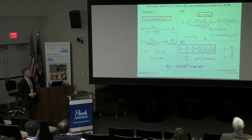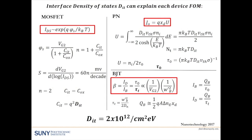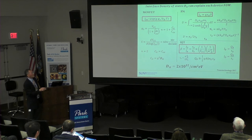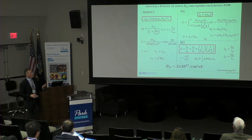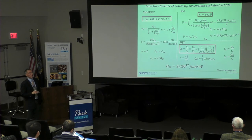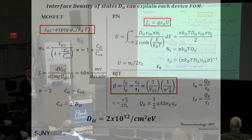Each device — PN diode, MOSFET, and BJT — has its own figure of merit, but they're all connected through a single parameter. The sub-threshold slope of the MOSFET can be measured and correlated to the interface density of states. That interface density of states gives us the generation current and hence the leakage current of the PN diode, and the minority carrier lifetime tau. Using that same tau, we can calculate the figure of merit for the BJT, since gain is the ratio of transit time to lifetime. So using a single parameter — the interface density of states — you can understand all three devices.